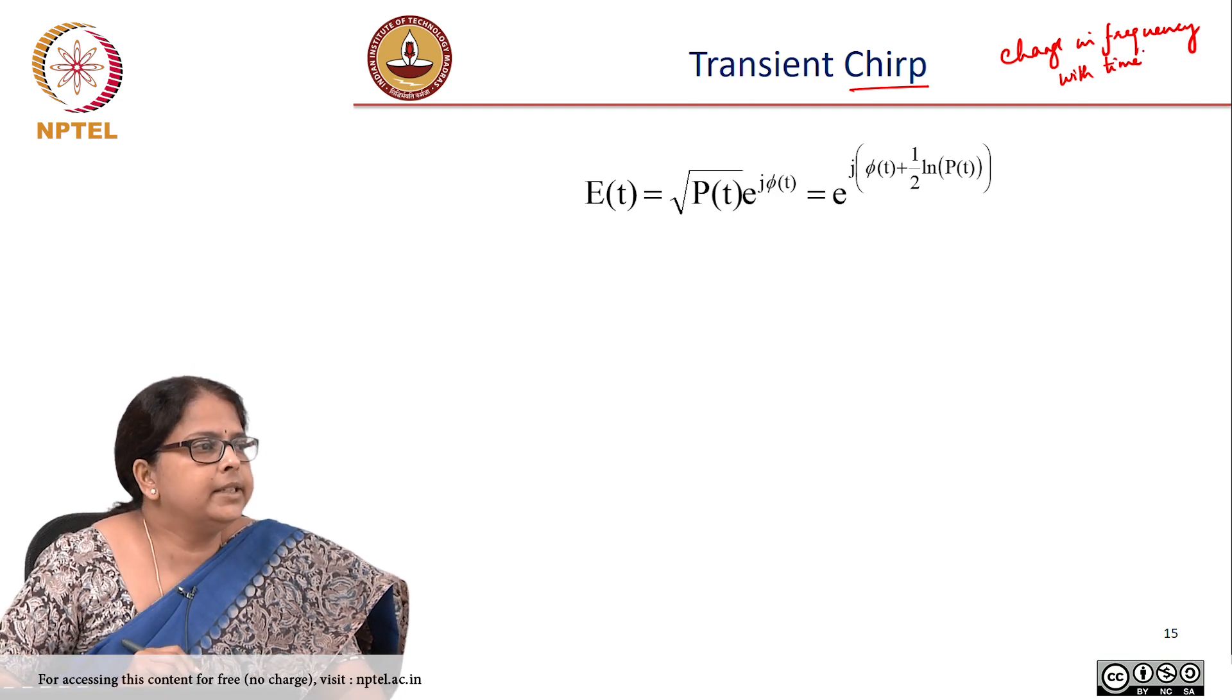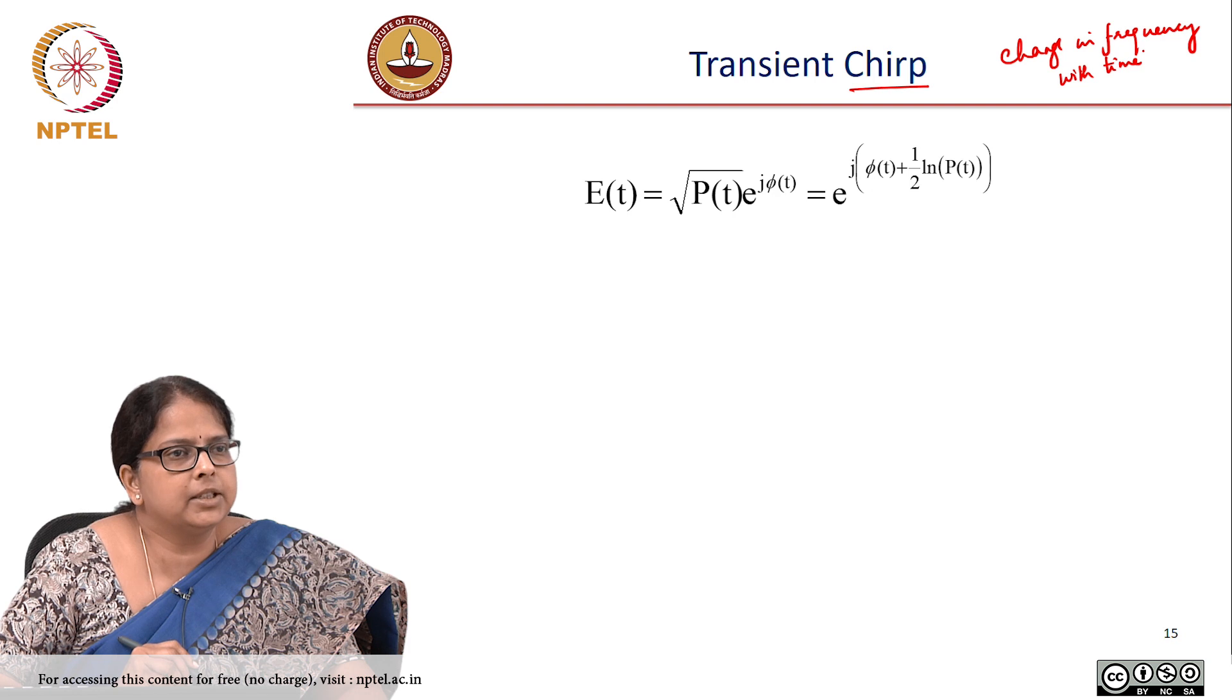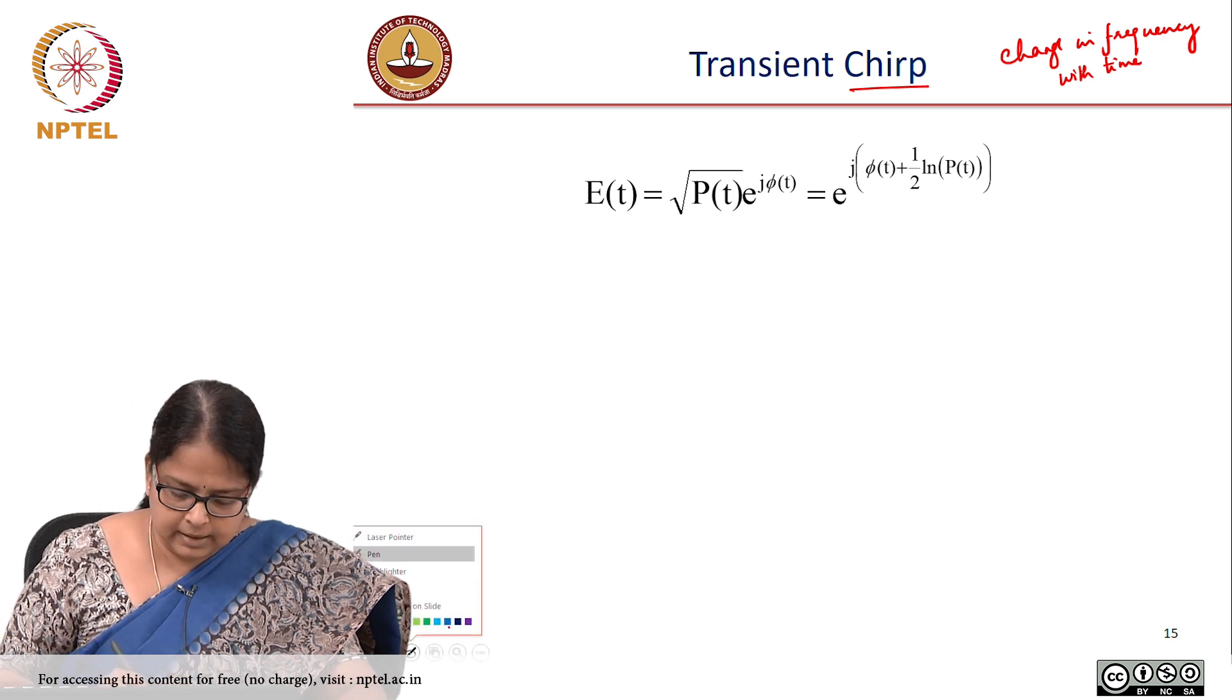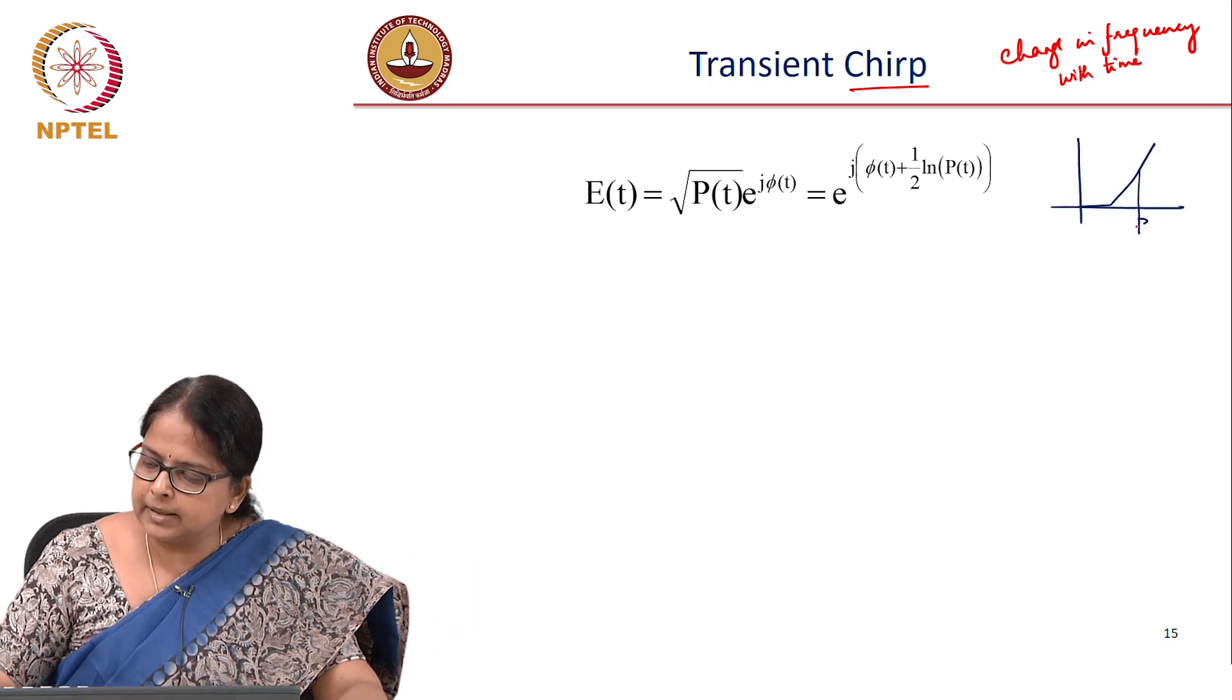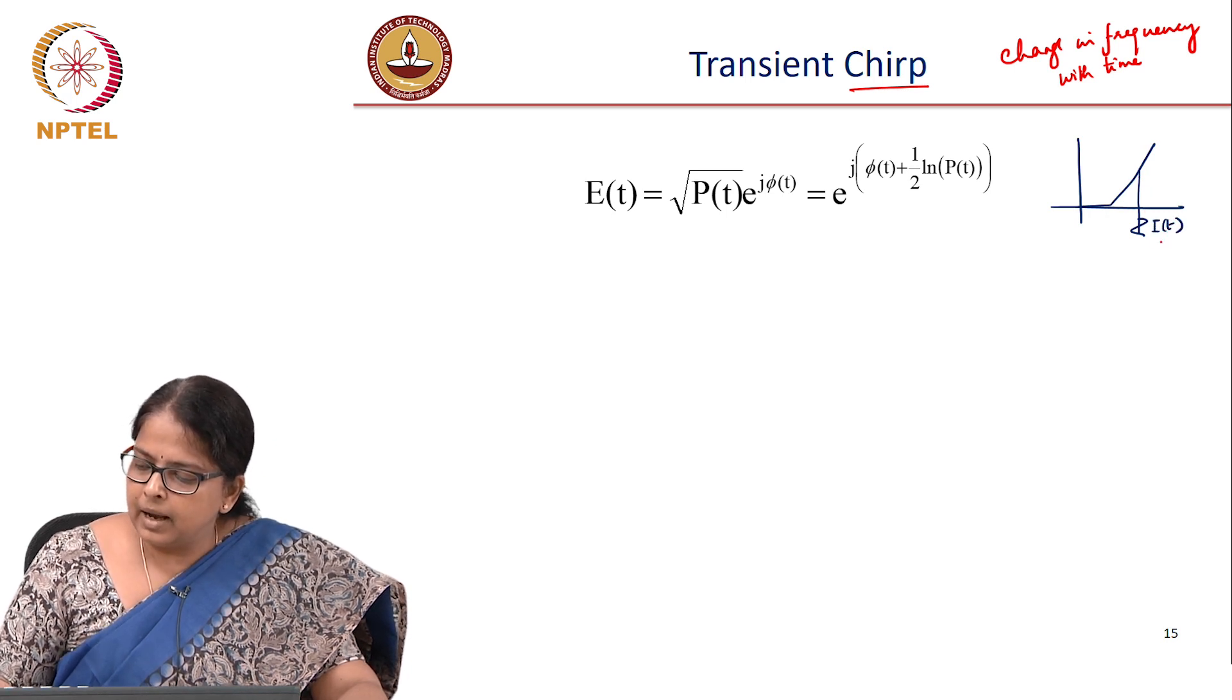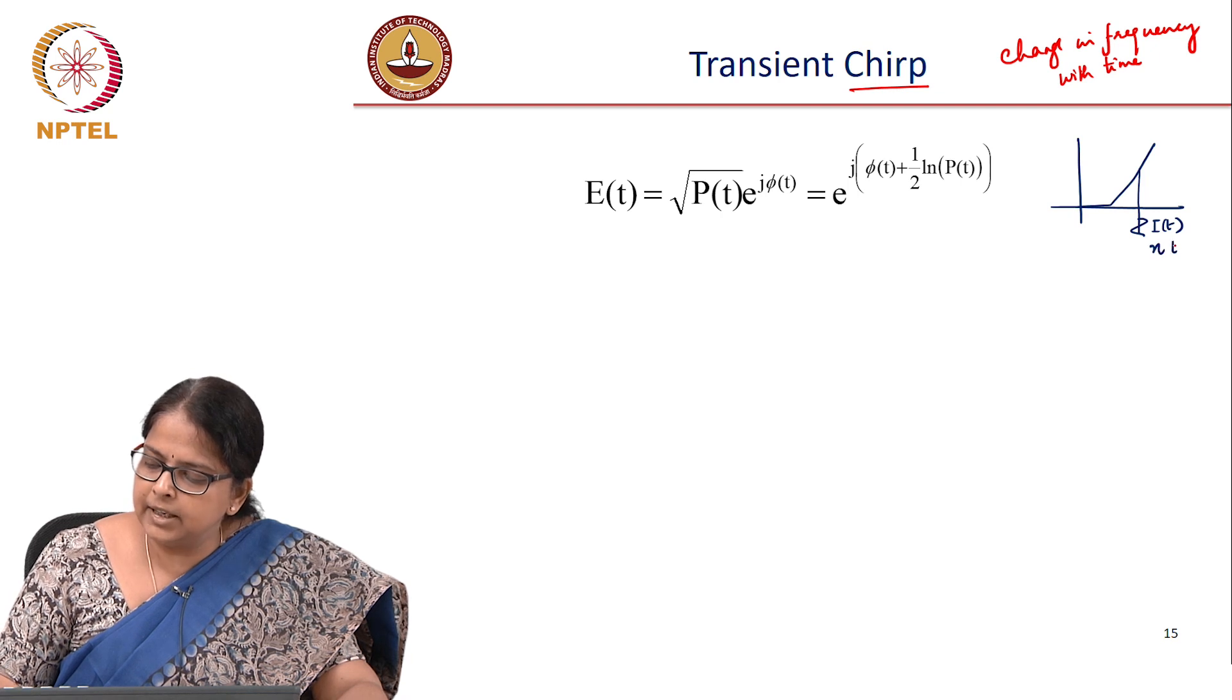Or you say instantaneous frequency changes with time, that is chirp. And as I discussed earlier, when I have a modulation happening in my system, it means that my current is changing with time and so my carrier density capital N is changing with time.